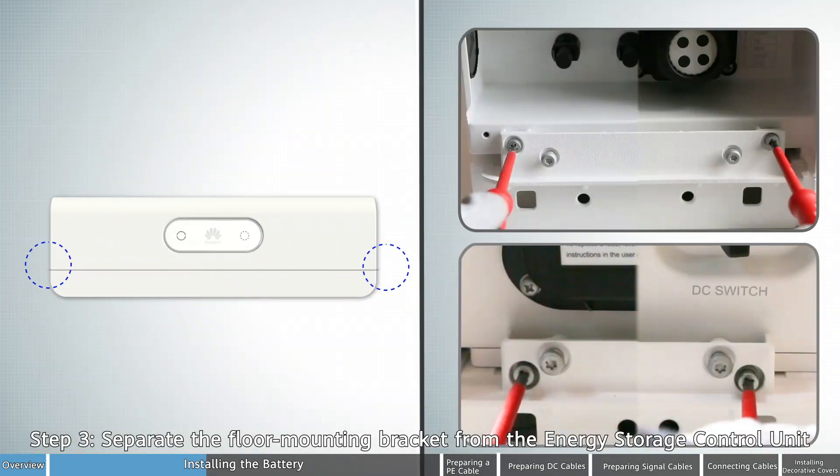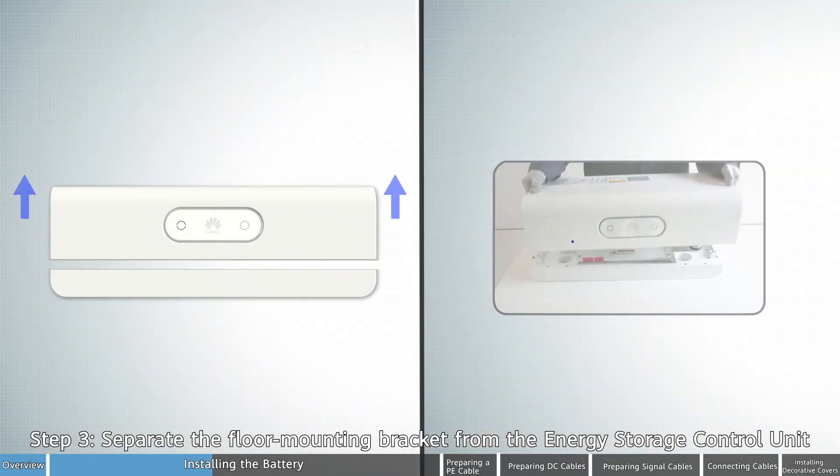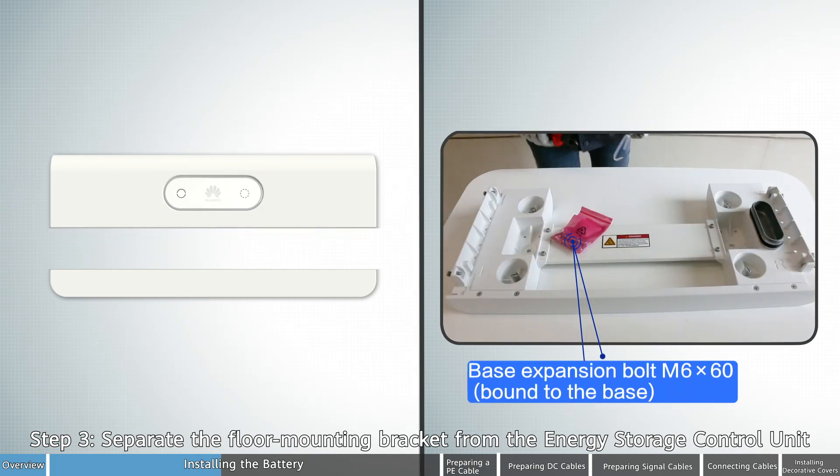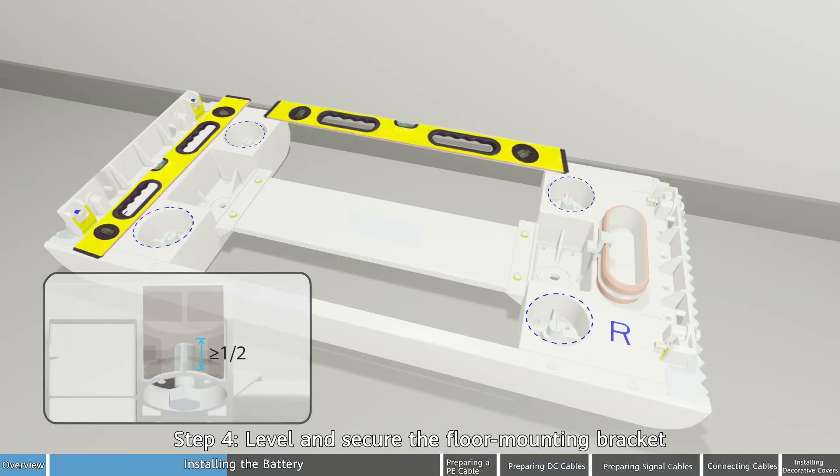Step 3: Separate the floor mounting bracket from the energy storage control unit. Step 4: Level and secure the floor mounting bracket.